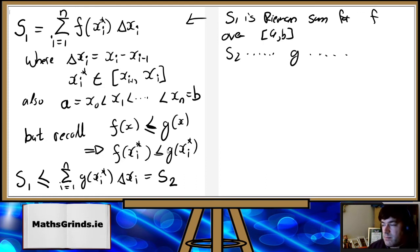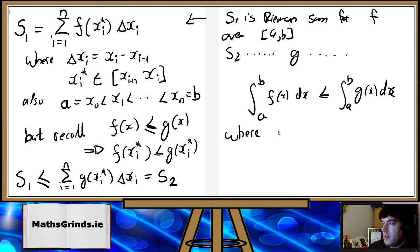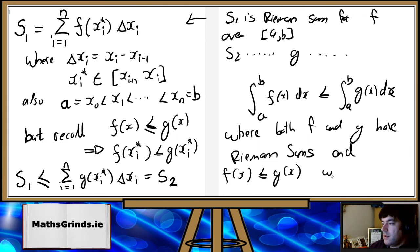So it seems pretty clear that the integration is true, that from a to b, f of x dx is less than or equal to a to b, g of x dx, with two big requirements that both of these have to have a Riemann sum, and f has to be less than g, where both f and g have Riemann sums, and f is less than or equal to g, where x is between a and b.